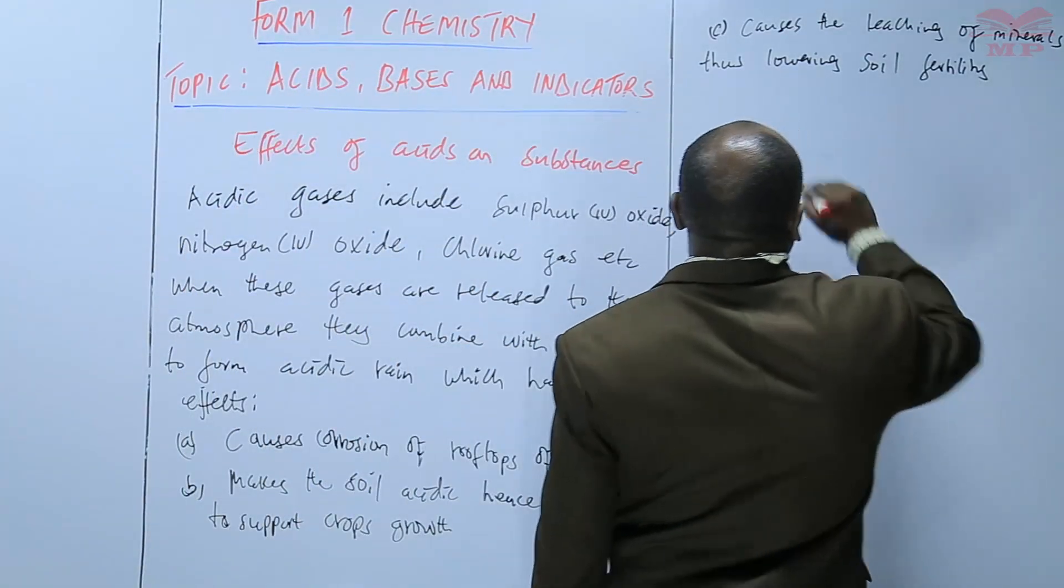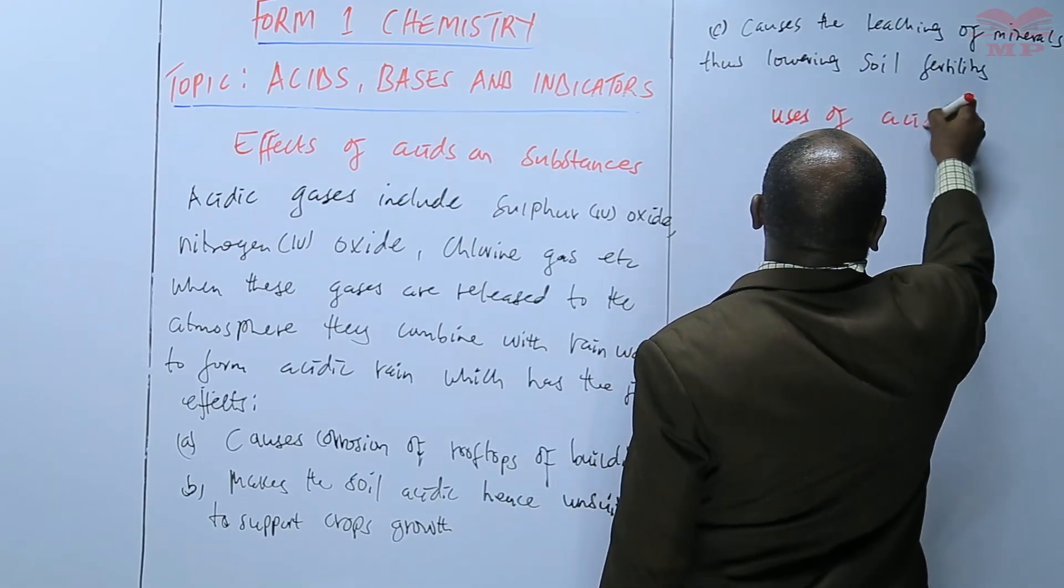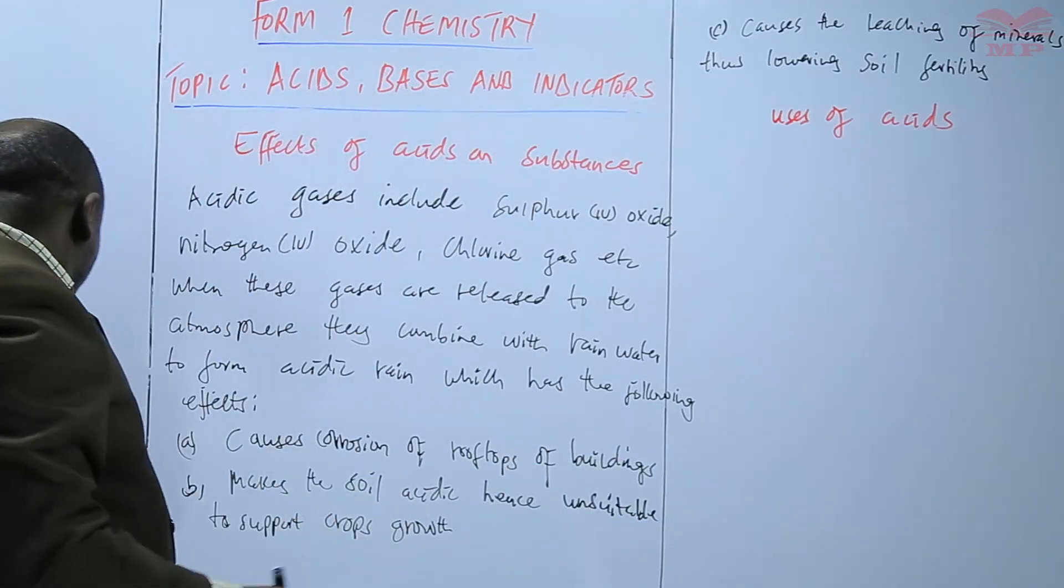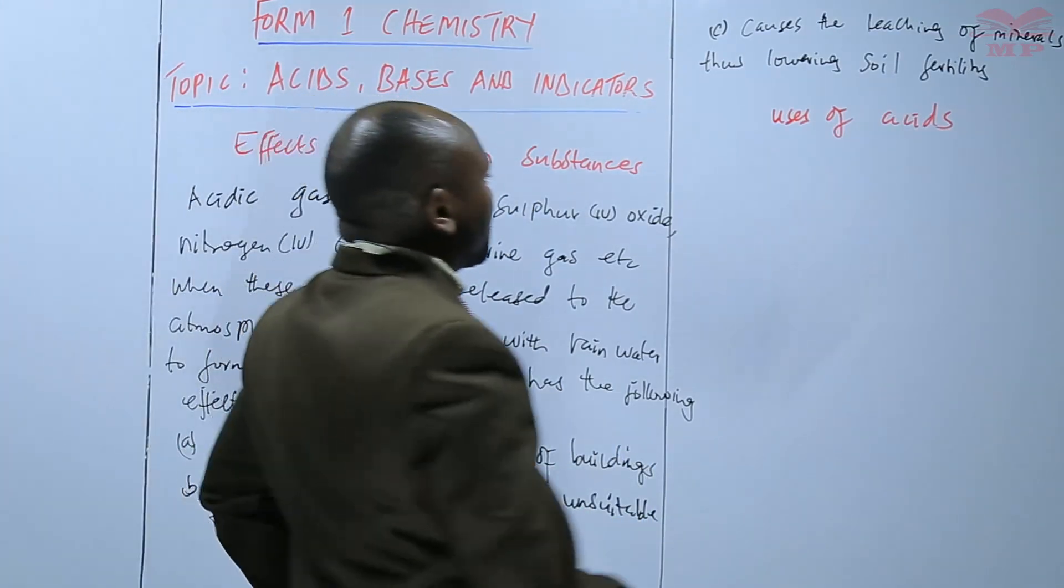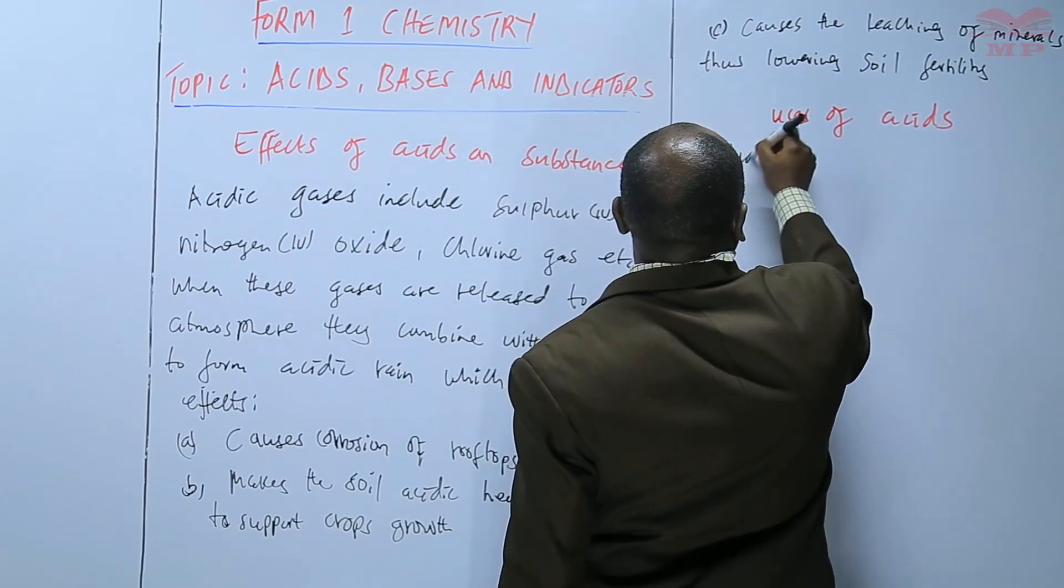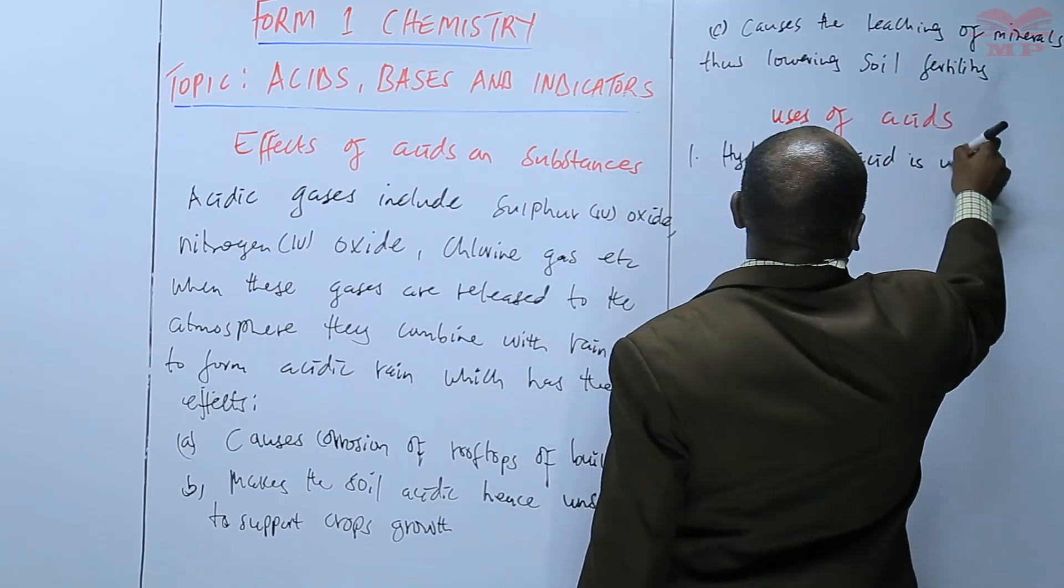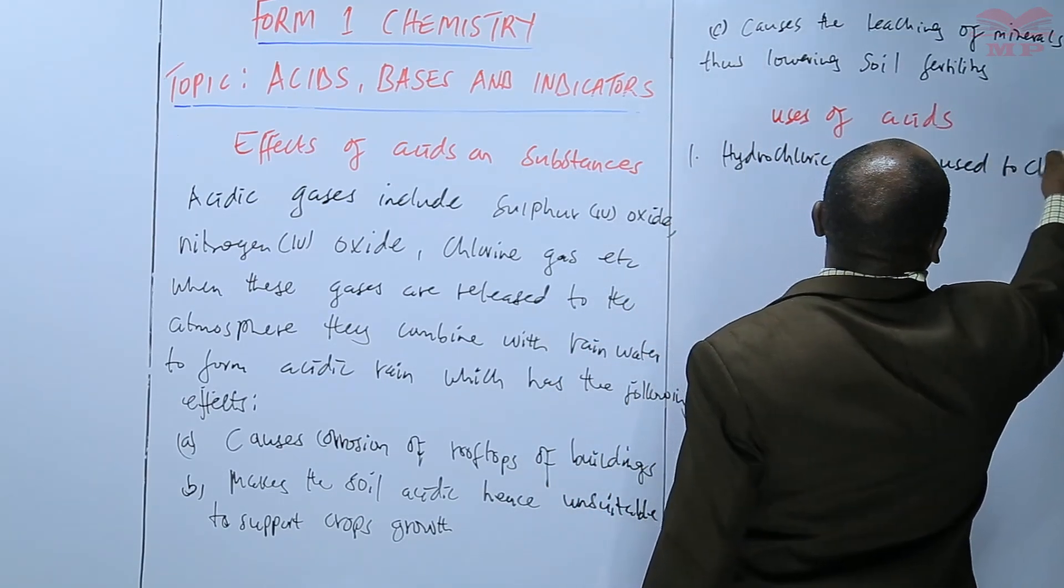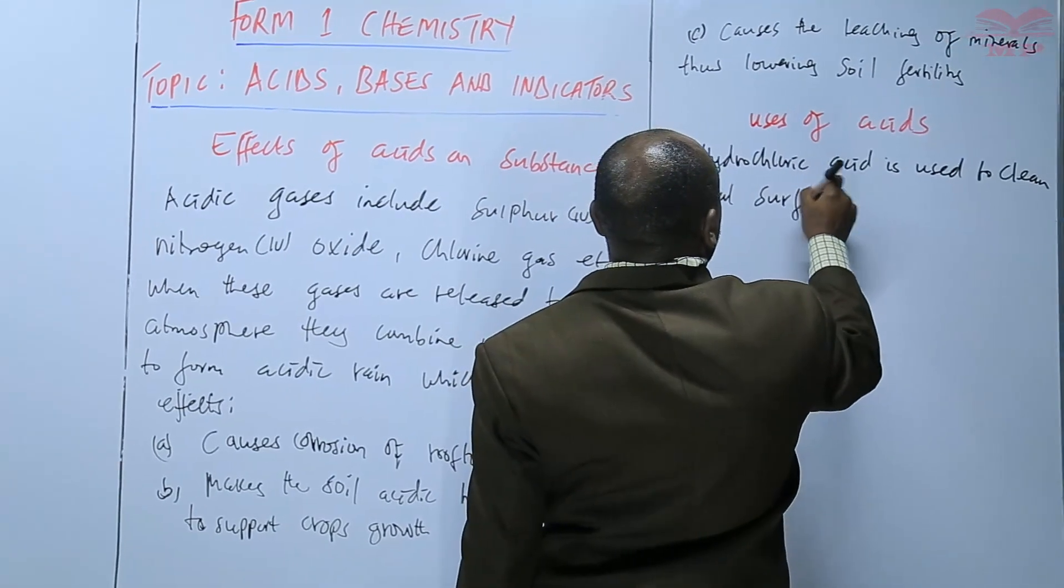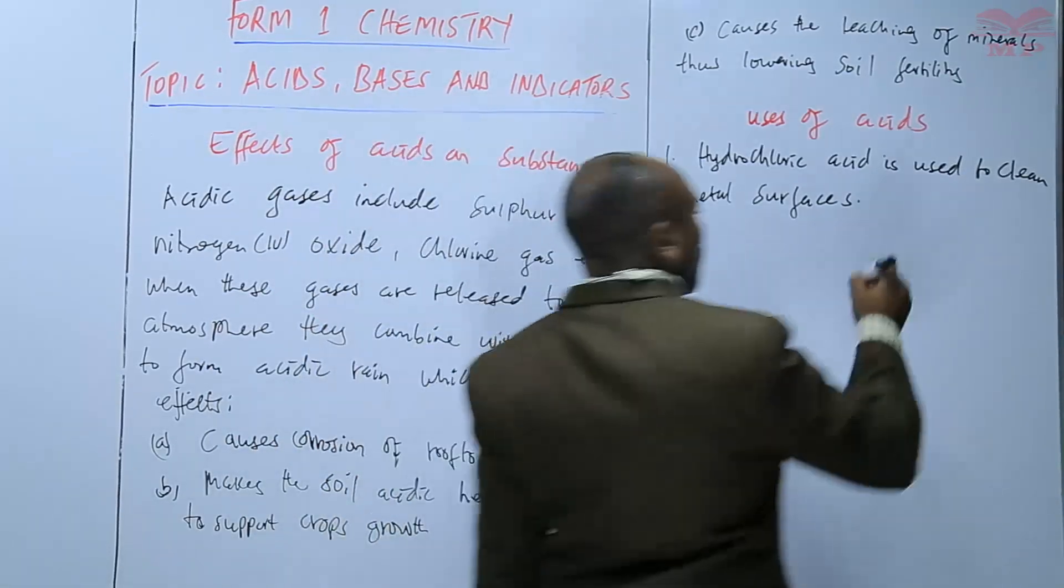We can also look at the uses of acids and also bases. We have acids that we use for various uses. For example, we have hydrochloric acid. Hydrochloric acid is used to clean metal surfaces.